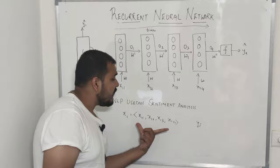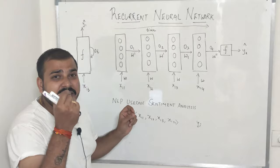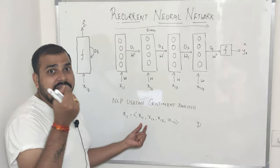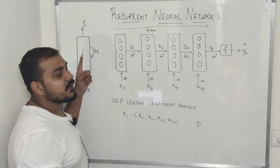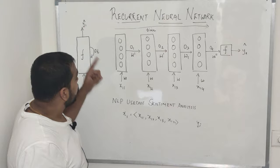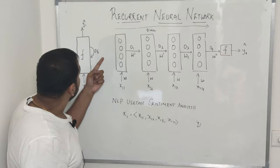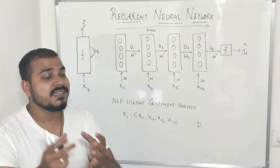Our RNN at each and every time step — like at T equal to one — will pre-process one word. Then at T equal to two will pre-process the second word. What will happen as we are passing the first word: the pre-processing will happen and then it will give you an output. And for the next word, whatever was the output for the first word, that will also be sent to this particular neuron — recurrent neural network. Because of this, the sequence information is kept.